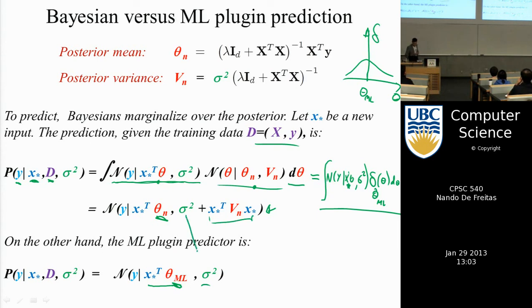Note that both expressions have the same sigma. But in the Bayesian scheme, there's a new term that appears. And that term has the new input data, x. And it has this matrix V, which is the inverse of something that has to do with the data, the training data, x transpose x.